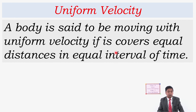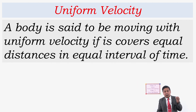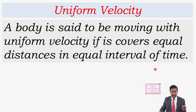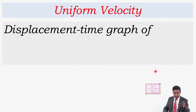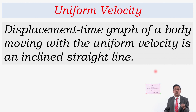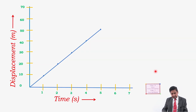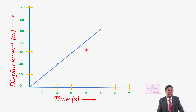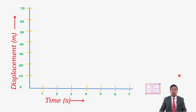Our target is to see what type of graph is obtained if we represent uniform velocity on a displacement-time graph. The displacement-time graph of a body moving with uniform velocity is an inclined straight line.